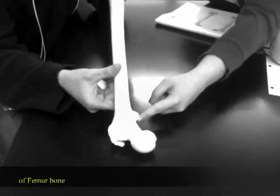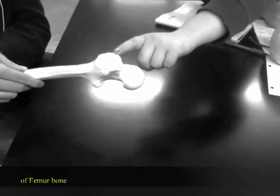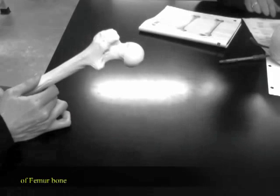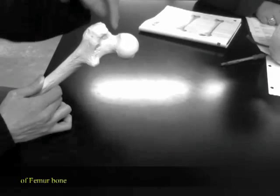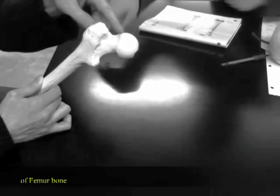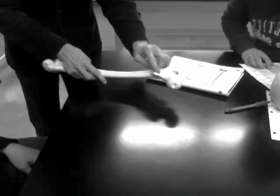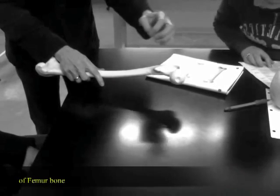This is the lesser trochanter. It sticks out, it's on the same side as the head. Greater trochanter. So lesser, greater, head, neck. Intertrochanteric crest is going to be the crest in here. The crest is right here, between the greater and the lesser trochanter. The intertrochanteric crest really stands out. The line is very faint. This is the crest, it stands out.